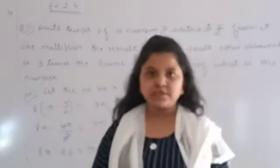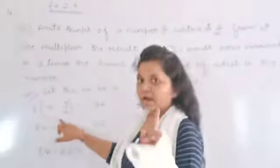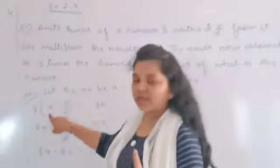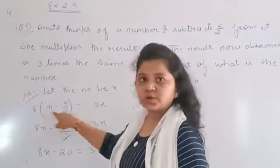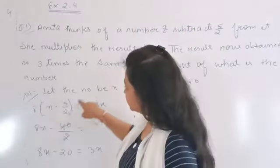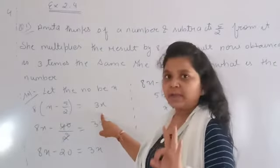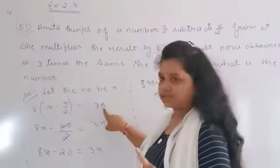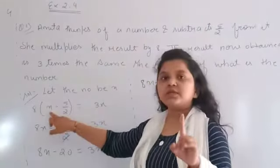So the number we need to find. She multiplies the result, and the answer is 3 times. The answer is 3 times the same number.